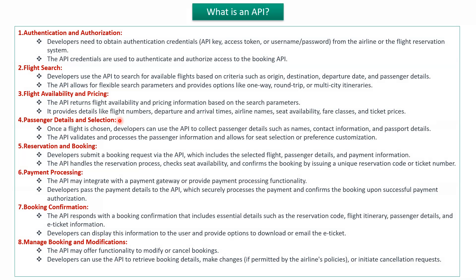The fourth one is the passenger details and selection API. Once a flight is chosen, developers can use this API to collect passenger details like names, contact information, and passport details. This API validates and processes the passenger information and allows for seat selection or preference customization.